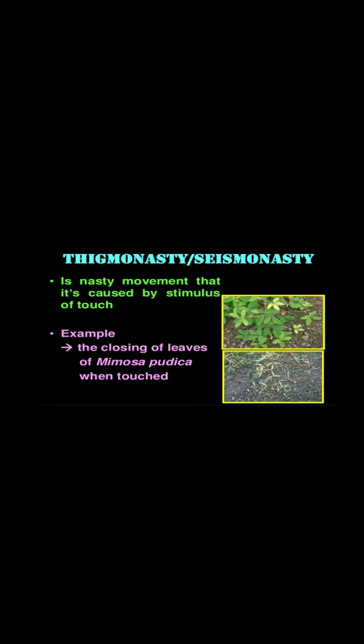The movement of a part of a plant in response to touch is thigmonasty. For example, the Mimosa pudica plant, otherwise known as the touch-me-not plant. This plant's leaves droop and fold inwards when touched. This movement is also called seismonasty.